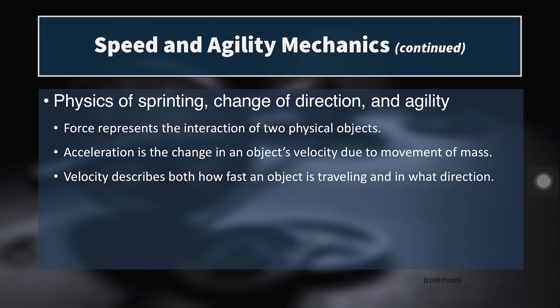With impulse and RFD, both metrics concern the forces you can produce. In the physics of sprinting, change of direction, and agility, force represents the interaction between two physical objects — in this case, the ground and the athlete's body or center of mass. Acceleration is the change in an object's velocity due to movement of mass. Velocity describes how fast an object is traveling and in what direction. We're describing the motion of an object and the force required to impart certain accelerations, thus achieving certain velocities.